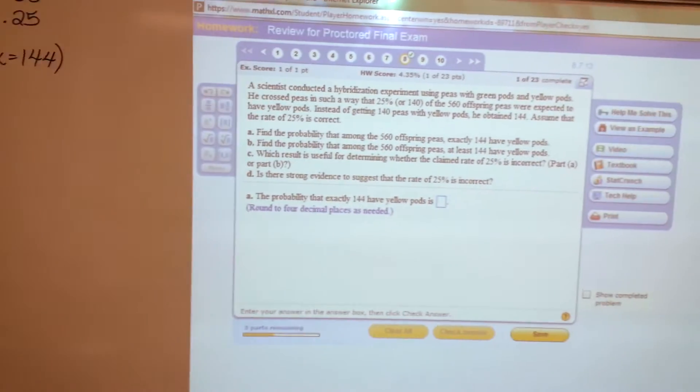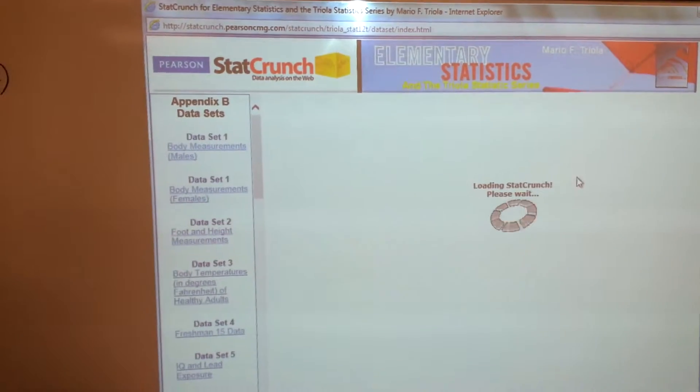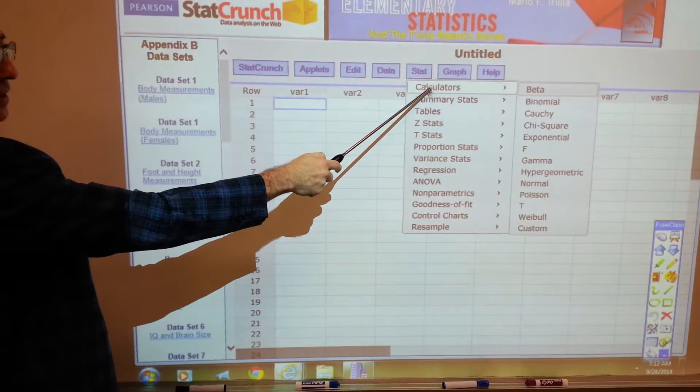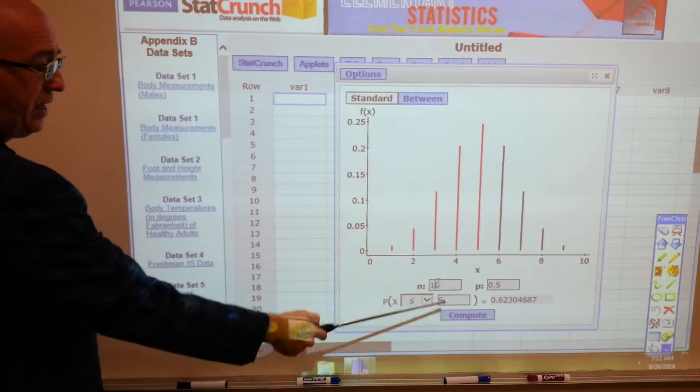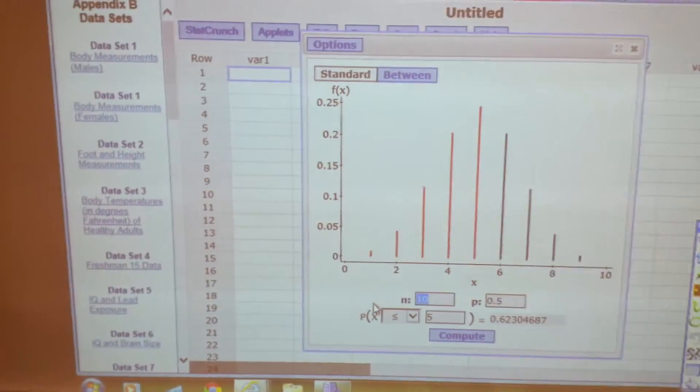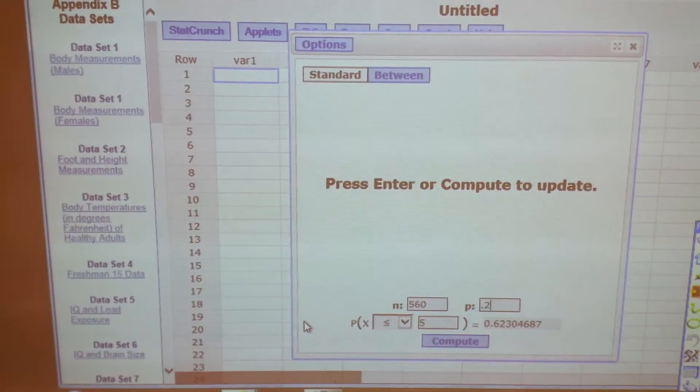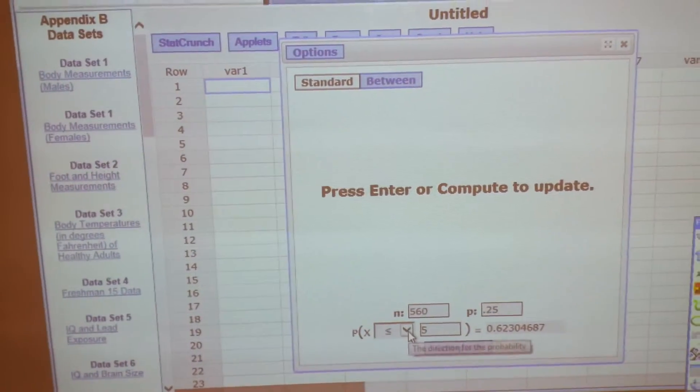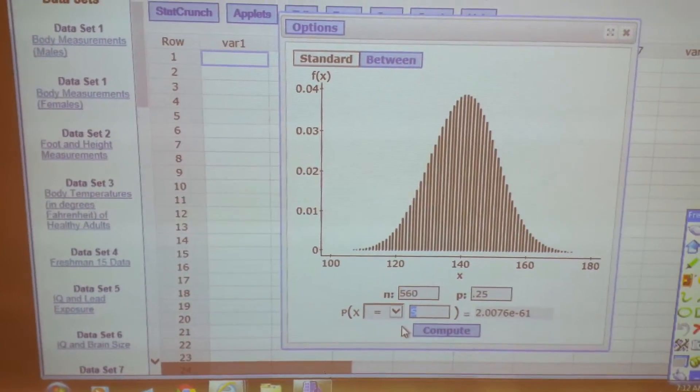And I'm going to do that using StatCrunch. I'm going to use the binomial feature rather than normal to approximate it. This works really nice. So let me come over here and punch these in. N is 560. P is 0.25. We want to know the probability that X, use the pull down menu, equals 144.